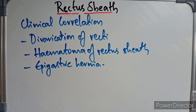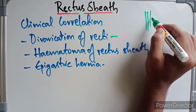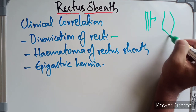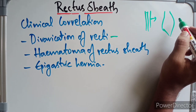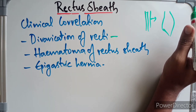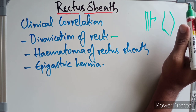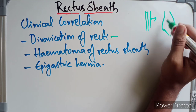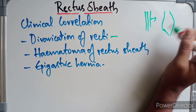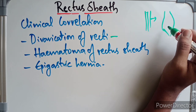Coming to diverrication of recti — the separation of the two rectus muscles usually occurs in elderly multiparous women. This is due to weak abdominal muscles. In this condition, the aponeurosis forming the rectus sheath becomes excessively stretched. Consequently, when the patient coughs or strains, the recti separate. This is known as diverrication of the recti.